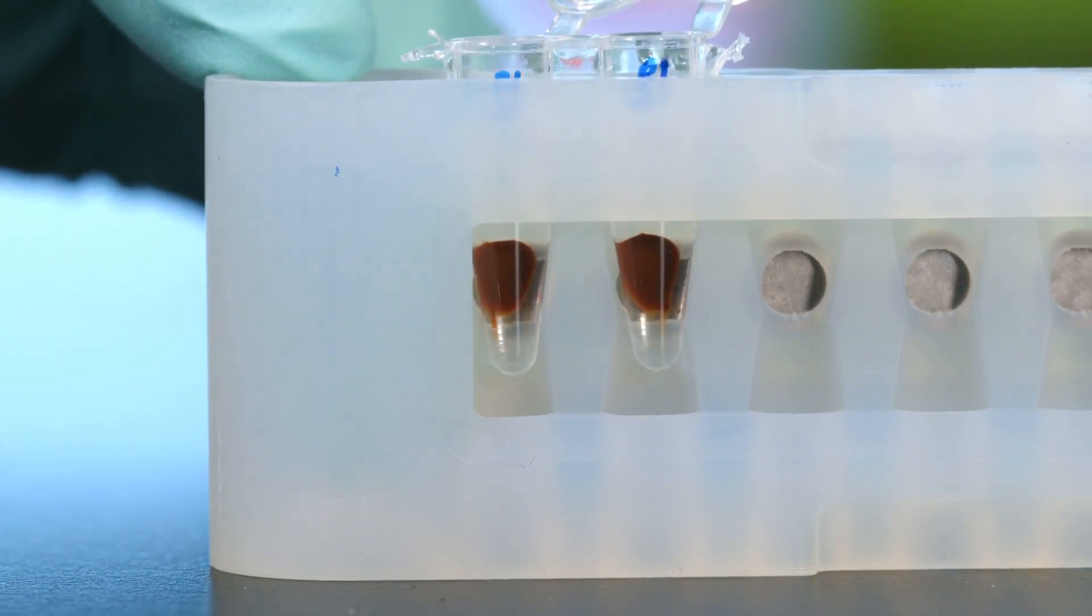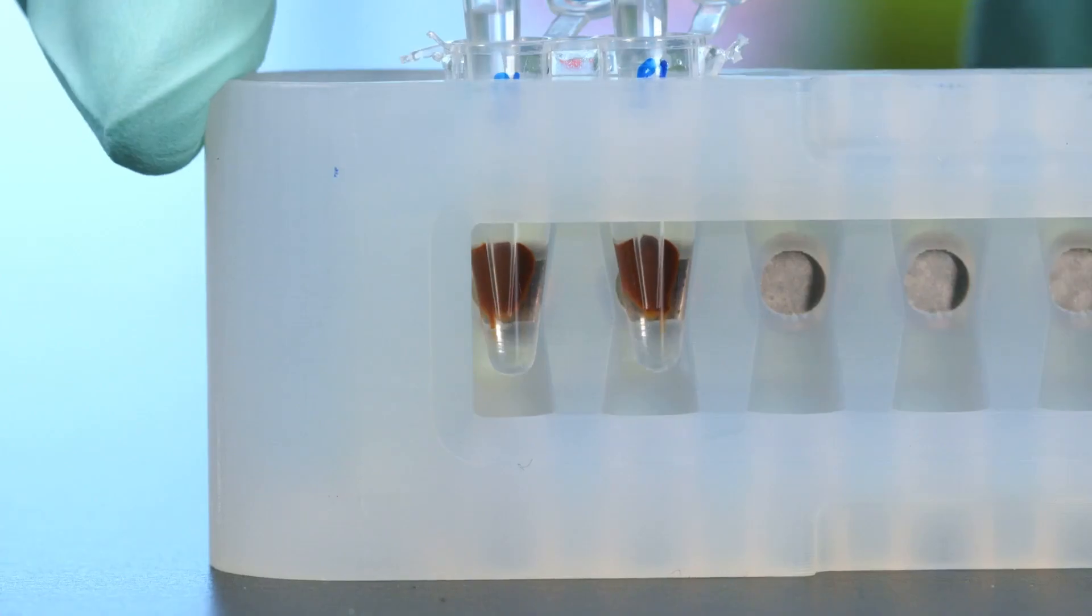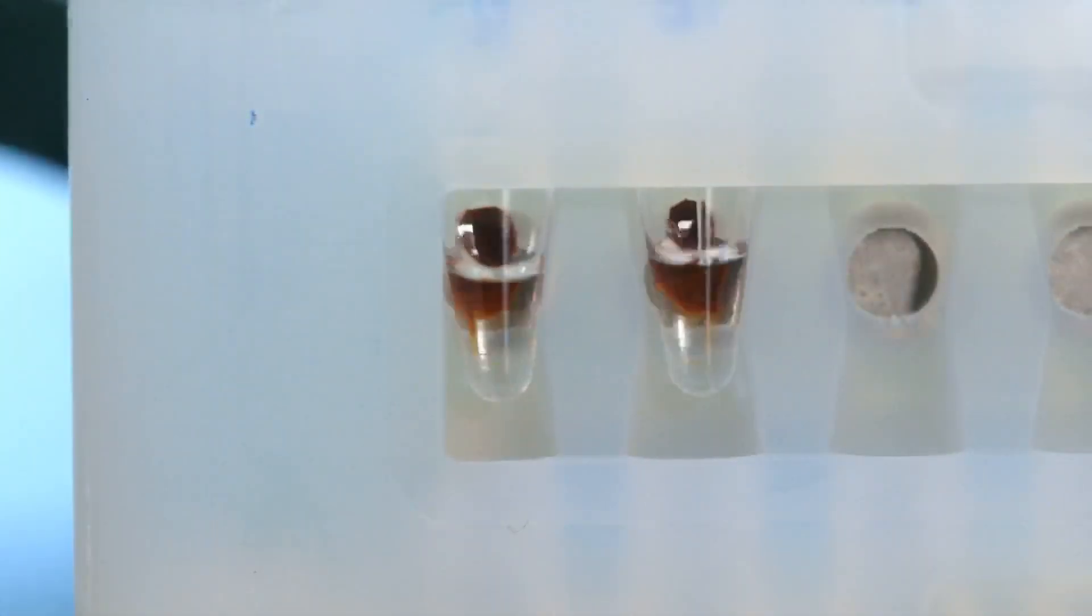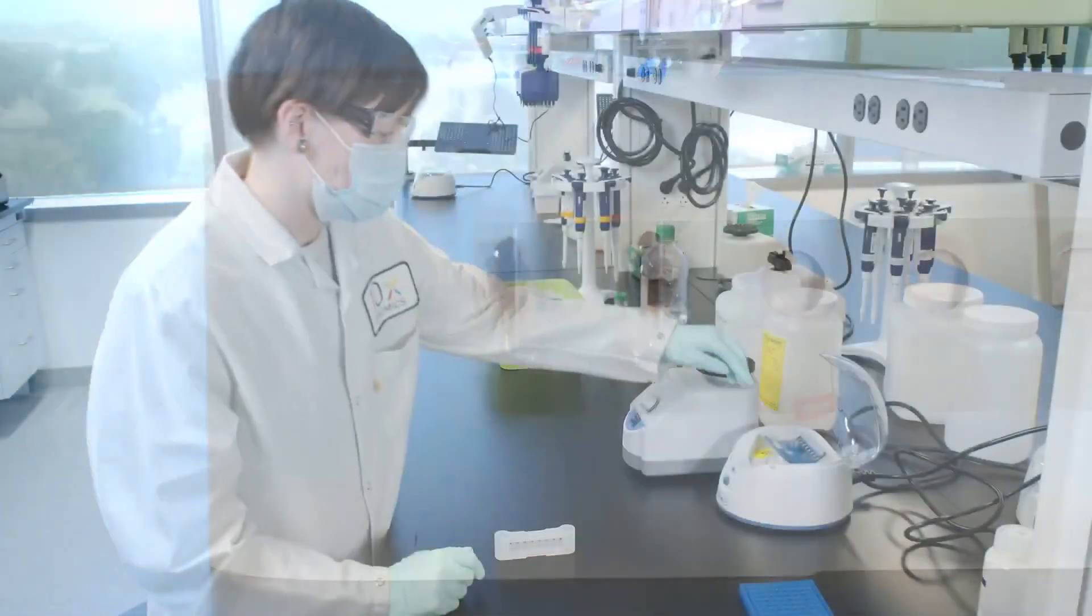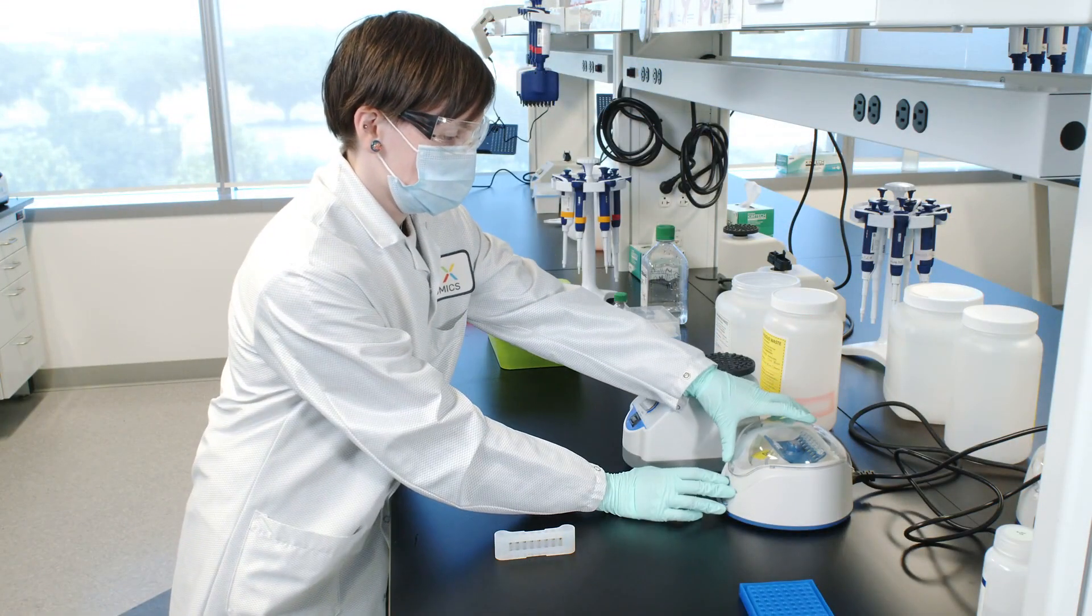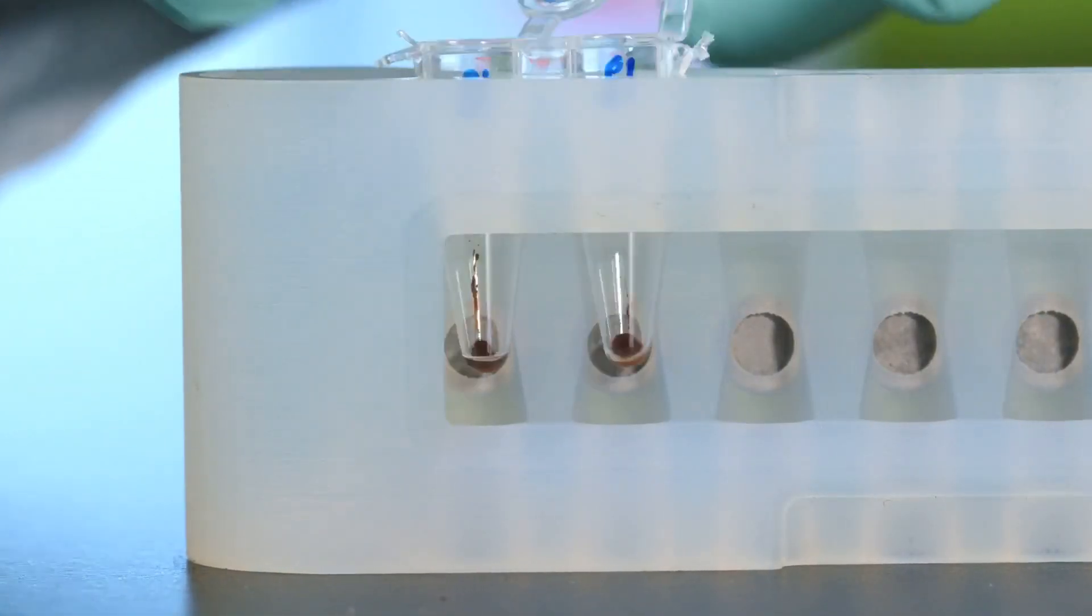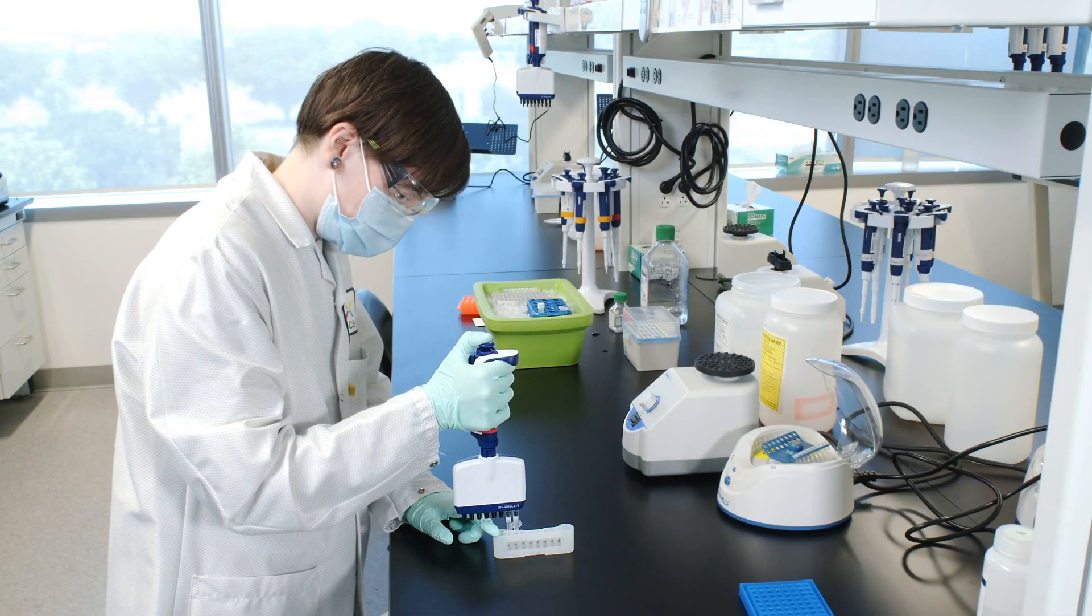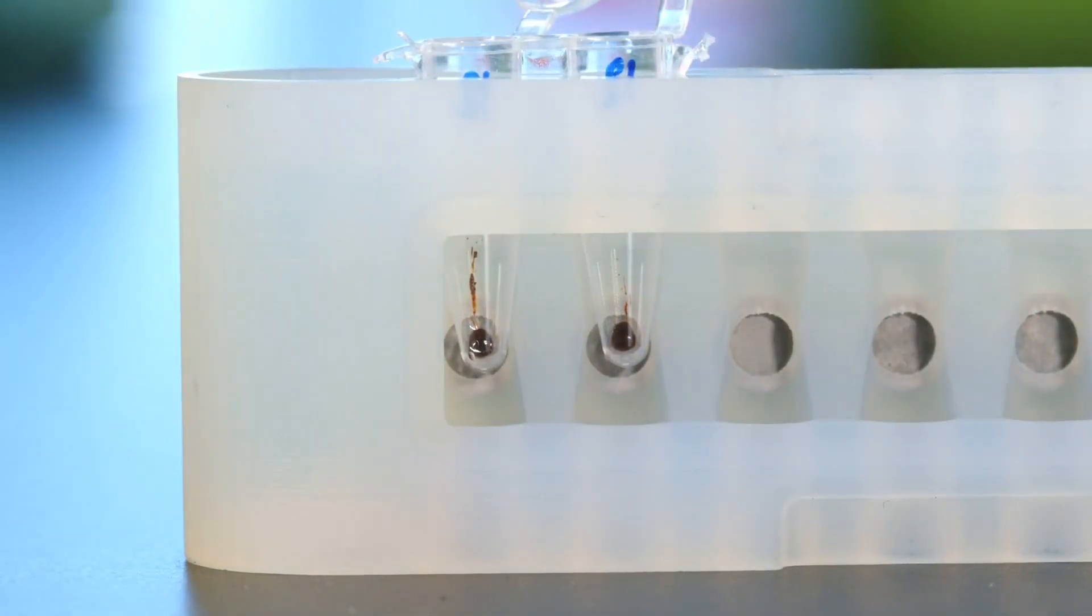Wait 30 seconds, then remove the ethanol. Repeat for a total of two washes. Centrifuge briefly, place on the magnet in the low position, and remove any remaining ethanol. Air dry for 2 minutes. Do not exceed 2 minutes as this will decrease elution efficiency.